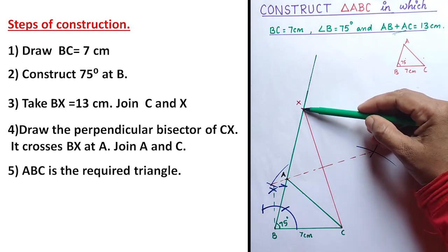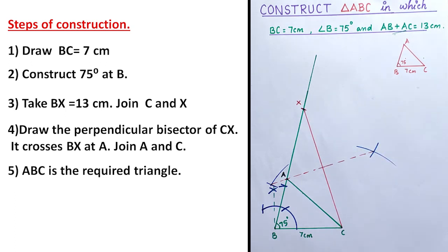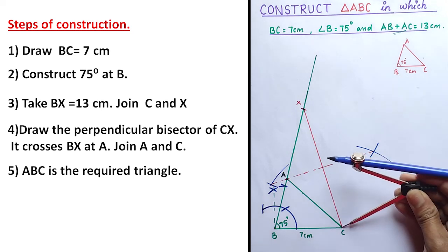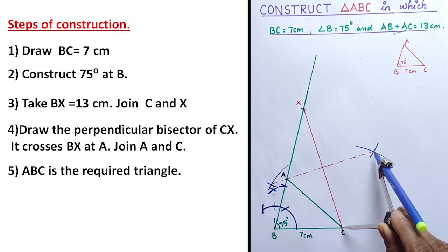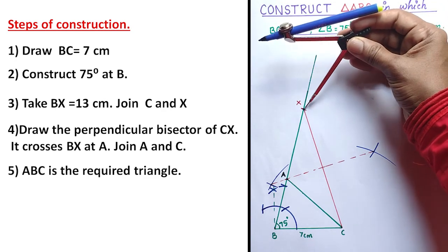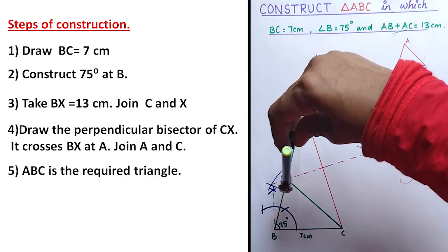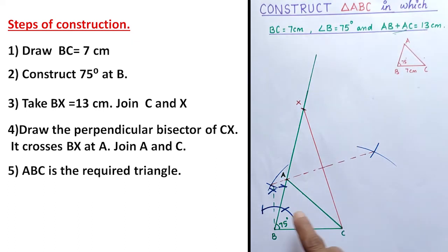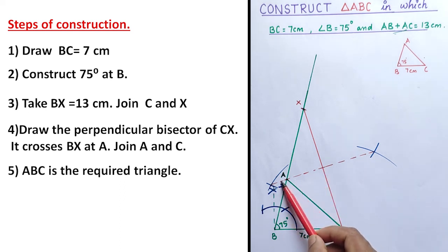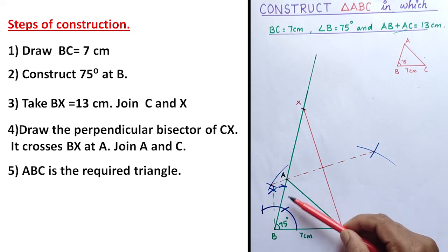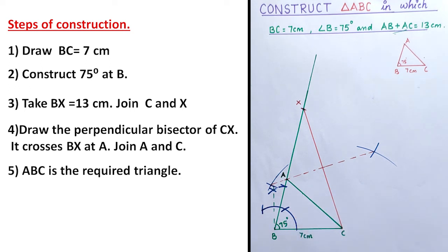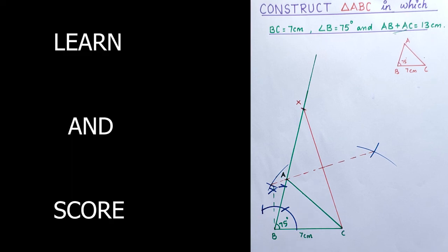Then join X and C — this red colored line. Draw the perpendicular bisector of CX: take more than half, place the metal tip on C, draw arcs on both sides. Without changing the compass, place the metal tip on X and draw arcs on both sides. Join the two intersecting points — that red dotted line is the perpendicular bisector — and it intersects BX at A. Join A and C. This green colored part is the required triangle. Hope you understand the concept, thank you.